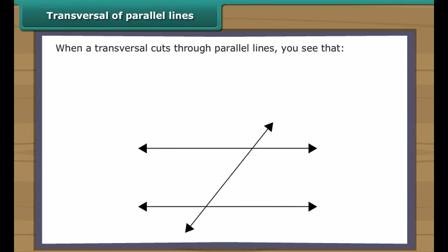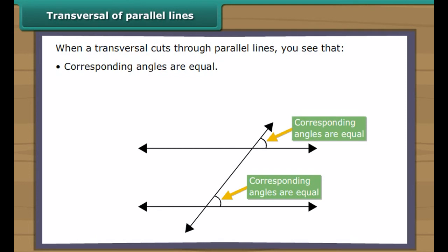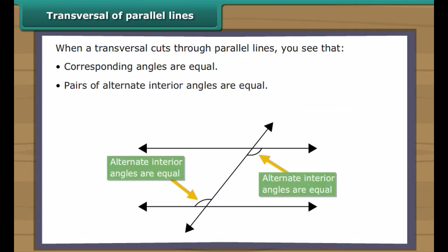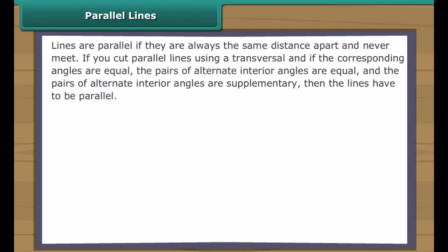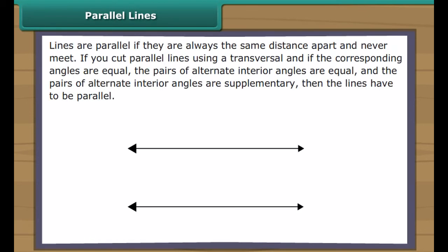Angles made by a transversal. Transversals form seven types of angles. They are described as corresponding angles, interior angles, exterior angles, alternate interior angles, consecutive interior angles, alternate exterior angles, and consecutive exterior angles.